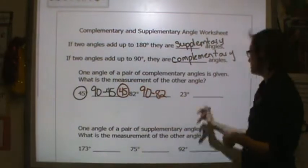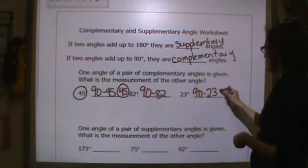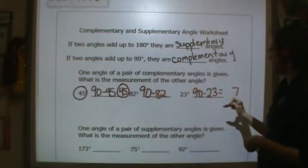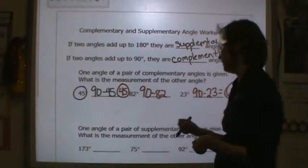And then the last one, 23 degrees. If I have 90 and I take away 23 I am going to have a total of 67 degrees. So that angle will be 67 degrees.